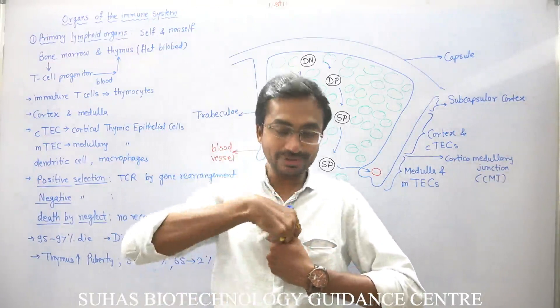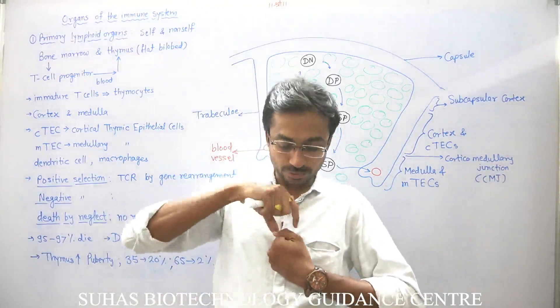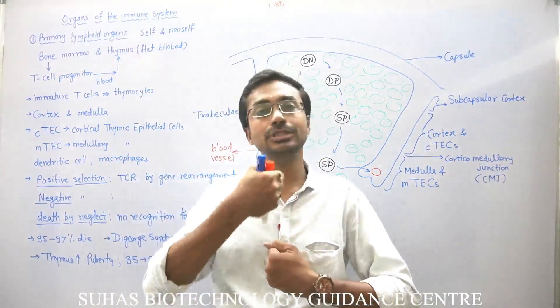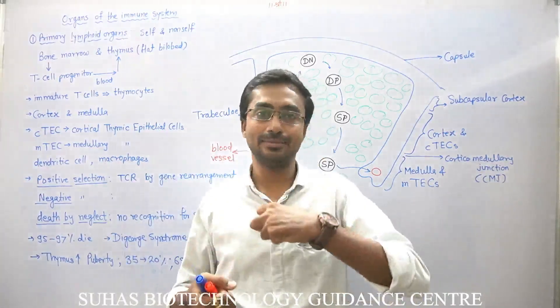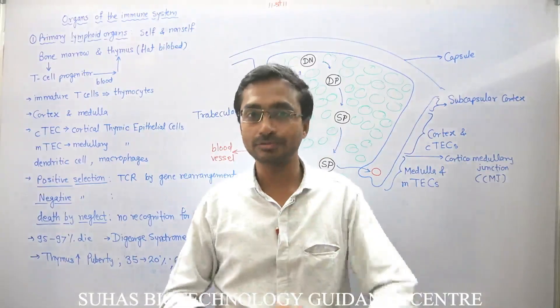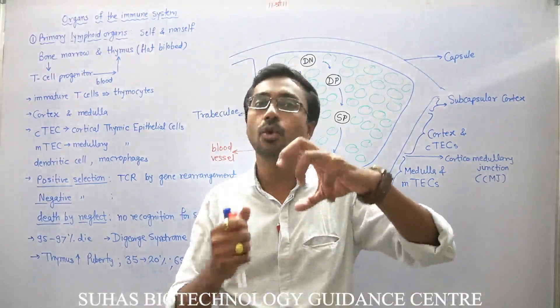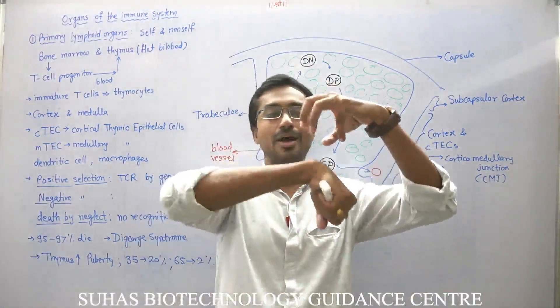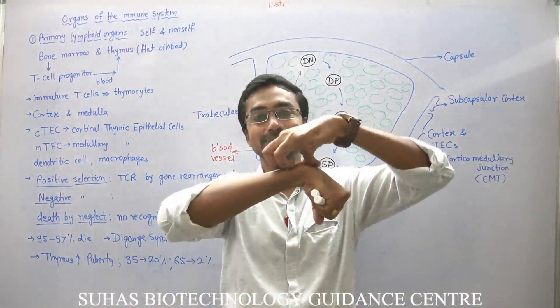So where the Aorta is going to take the turn, at that position there is Thymus. The Thymus — a part of the Thymus is in contact with the Aorta. Suppose this is the Aorta, then the Thymus is here.